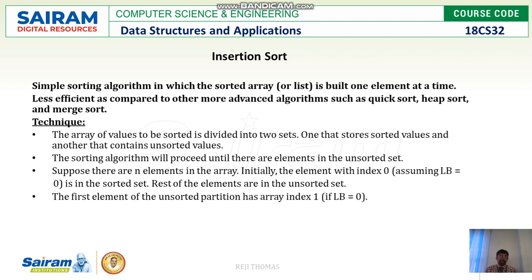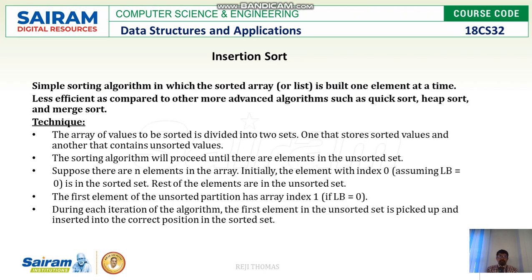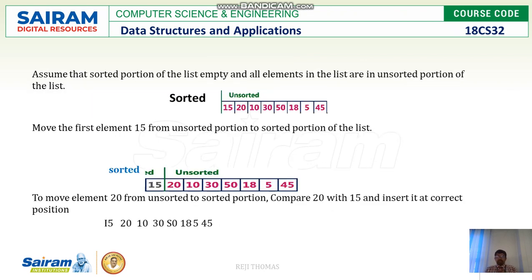The sorted and unsorted parts have different index values — when you see the next slide you'll get a better idea. During every iteration, we pick one element from the unsorted array and place it in the sorted one, but we have to ensure the picked element is inserted in the right place in the sorted array.